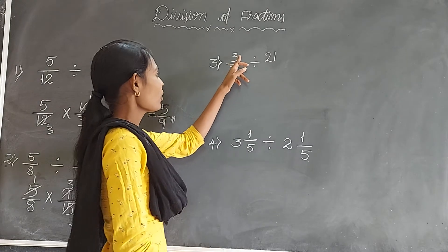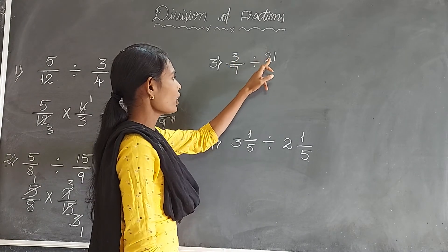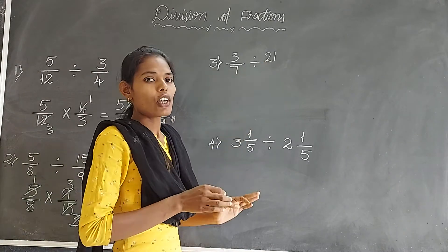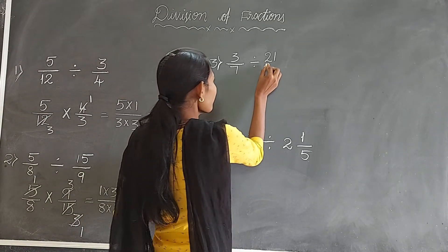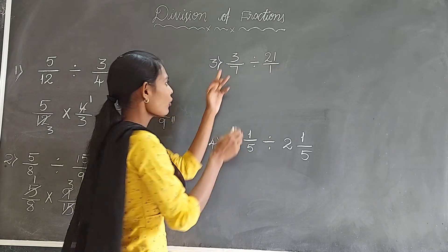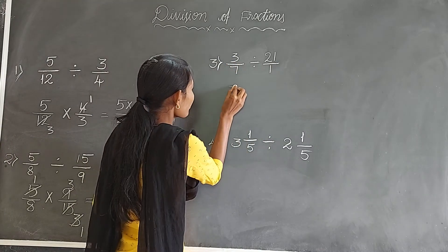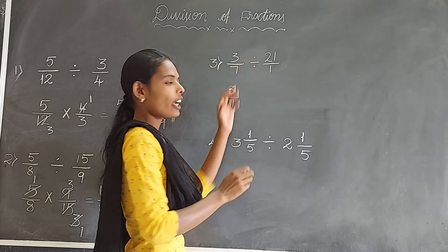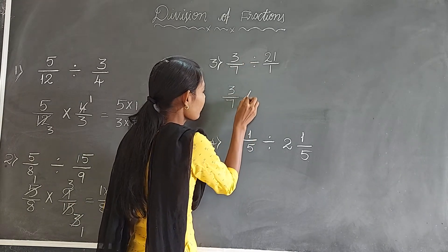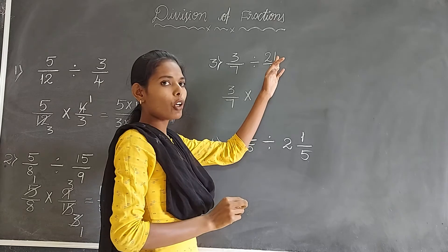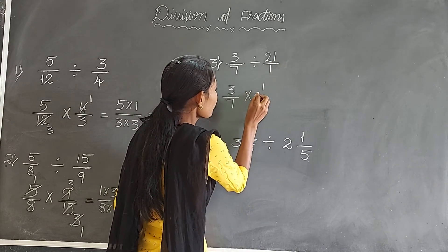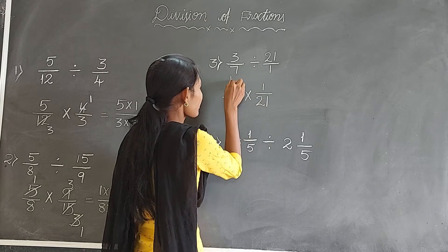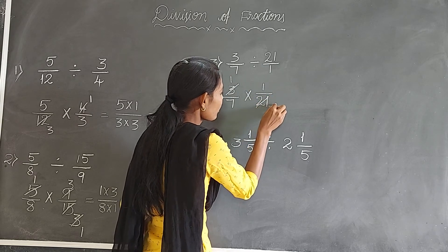Now we have the fraction 3 by 7 divided by 21. Here we don't have a denominator for 21, so we write it as 21 by 1. Now write this fraction: 3 by 7. The reciprocal of 21 by 1 is 1 by 21. 3 ones are 3, and 3 sevens are 21.